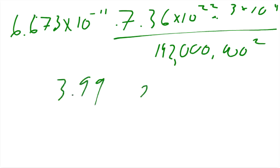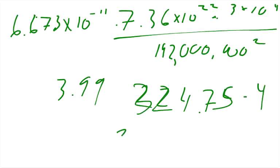And so you do 324.75, and we're going to round 3.99 up to 4 minus 4. You get 320.75 newtons as your answer.